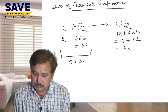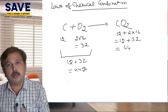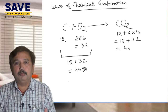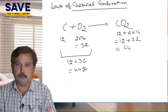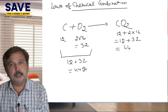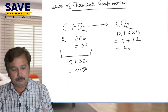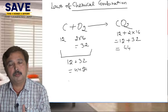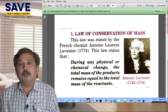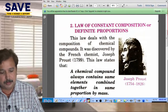So the mass of reactants: 12 plus 32 equals 44 grams, and our product carbon dioxide is also 44 grams. Whether there are 2 or 3 reactants or 1, 2, or 3 products, that is a different case, but the total mass of the reactants will always be equal to the total mass of the products. This is our first Law of Conservation of Mass.